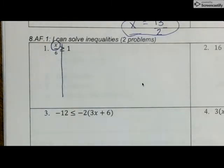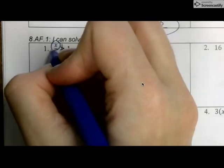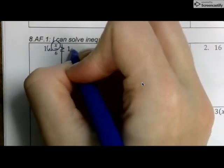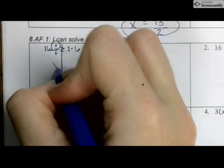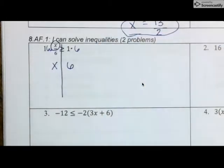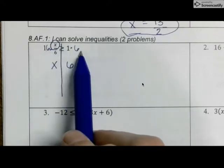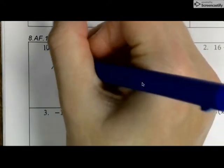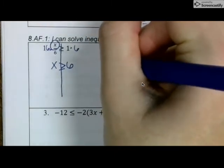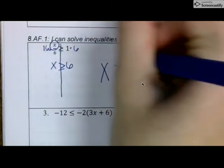The inverse of dividing by six is going to be multiplying by six on both sides. So did I multiply or divide by a negative number on both sides? No. I multiplied by positive six on both sides, which means my sign is going to stay the same. So this is going to be my final answer.